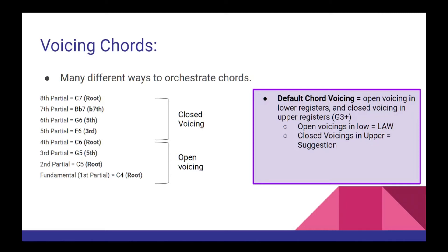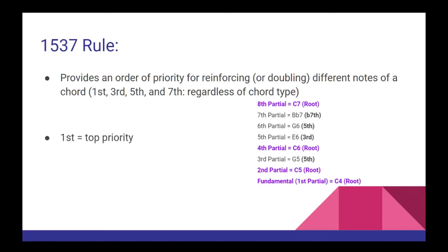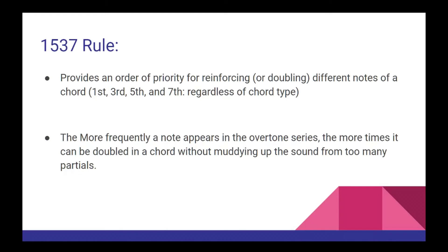Now let's get into the 1-5-3-7 rule. This rule provides an order of priority for reinforcing or doubling the different notes of a chord, ranking the 1st, 5th, 3rd, and 7th based on how frequently they appear in the overtone series. The 1st takes highest priority because it makes up half the notes in the first eight partials. The 5th takes second priority since it appears twice. Then the 3rd and 7th are least important, each appearing only once. The more times a note appears in the overtone series, the more safely you can double it — too many 3rds will cause their partials to clash with other notes and create a muddier sound. Doubling the 1st or 5th is a much safer option.